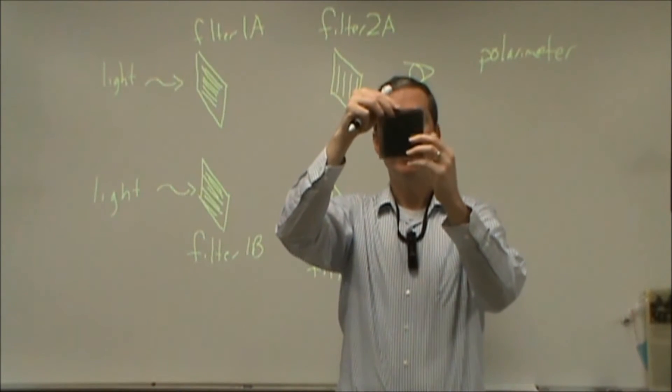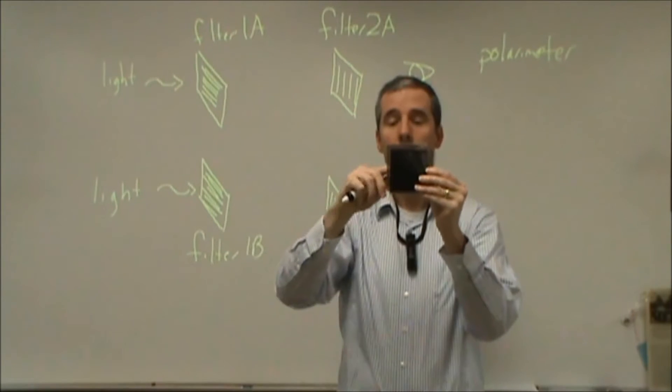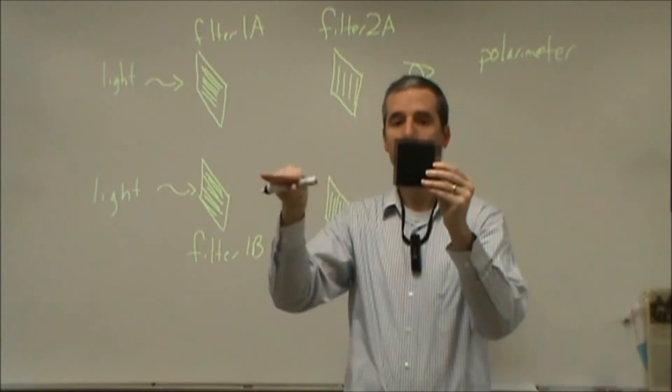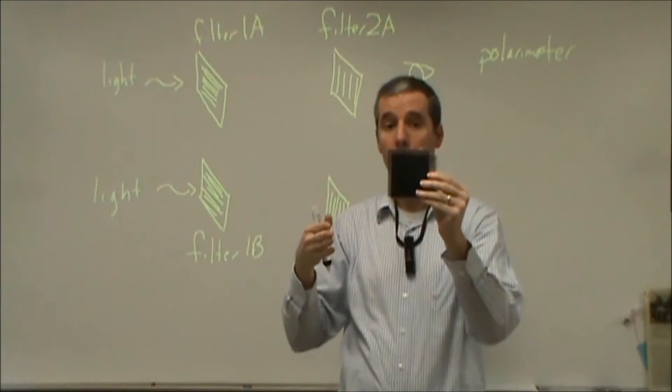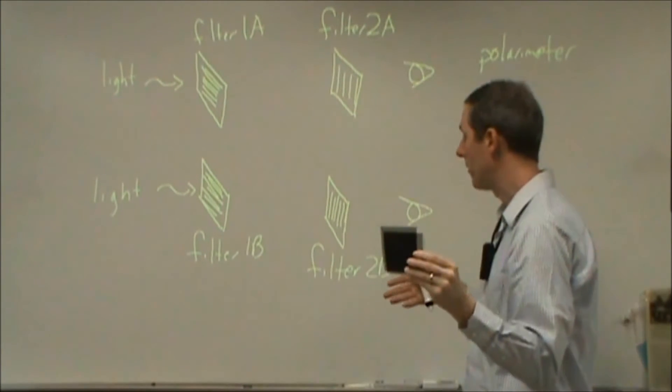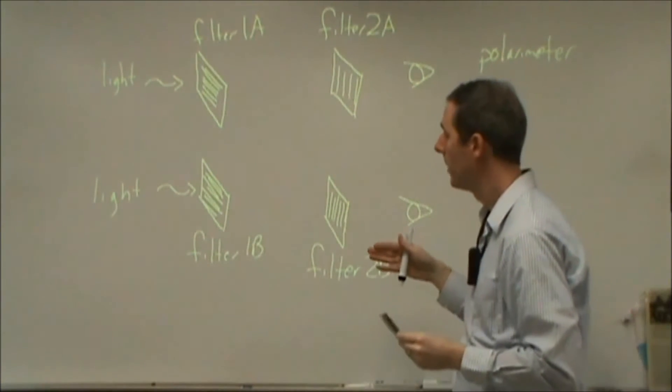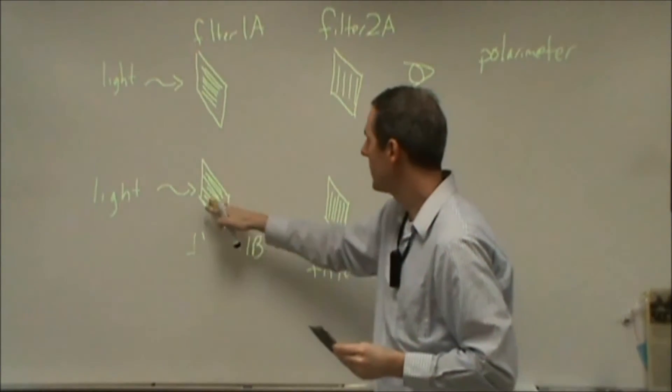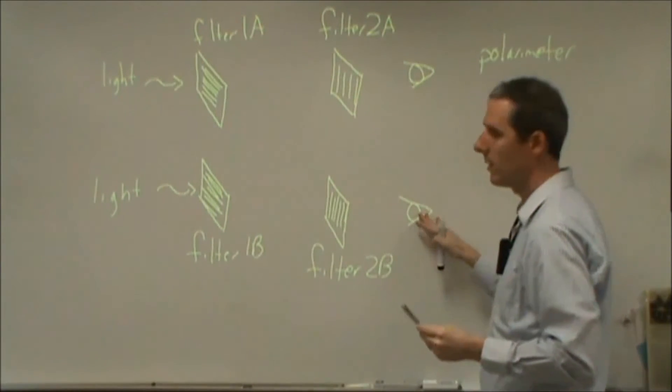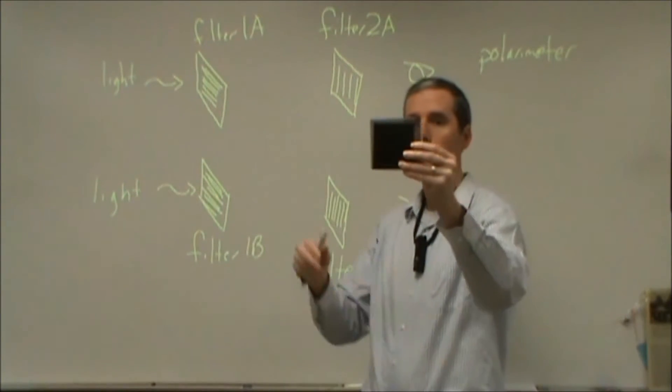So it becomes darker and darker now because these are at 90 degrees. So one of these filters is blocking out electric field oscillations in one direction. The other is blocking out electric field oscillations in the other direction. So net, they're blocking out all the light incident upon them. So if we had an eyeball here, we wouldn't see any light coming through here, and that's what you're seeing here when I hold them like this.